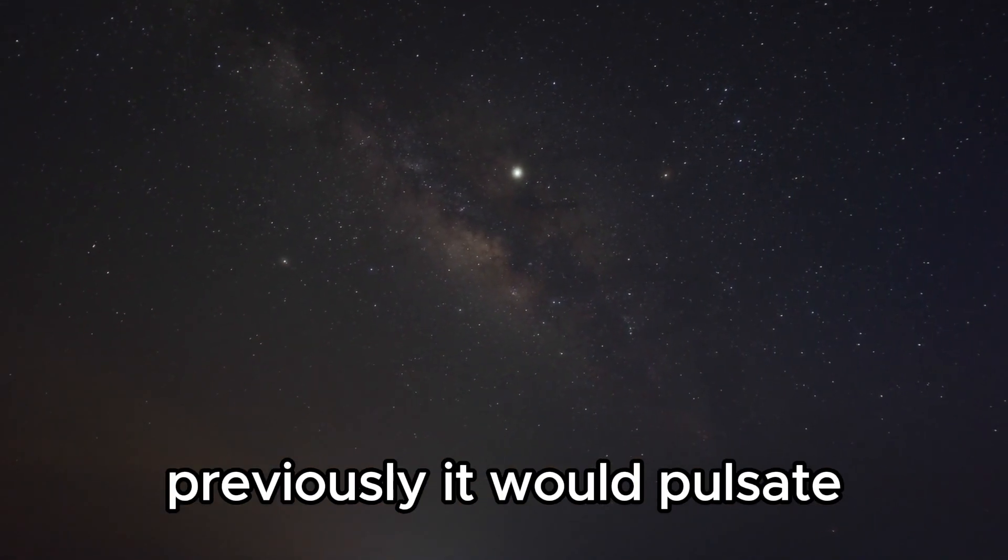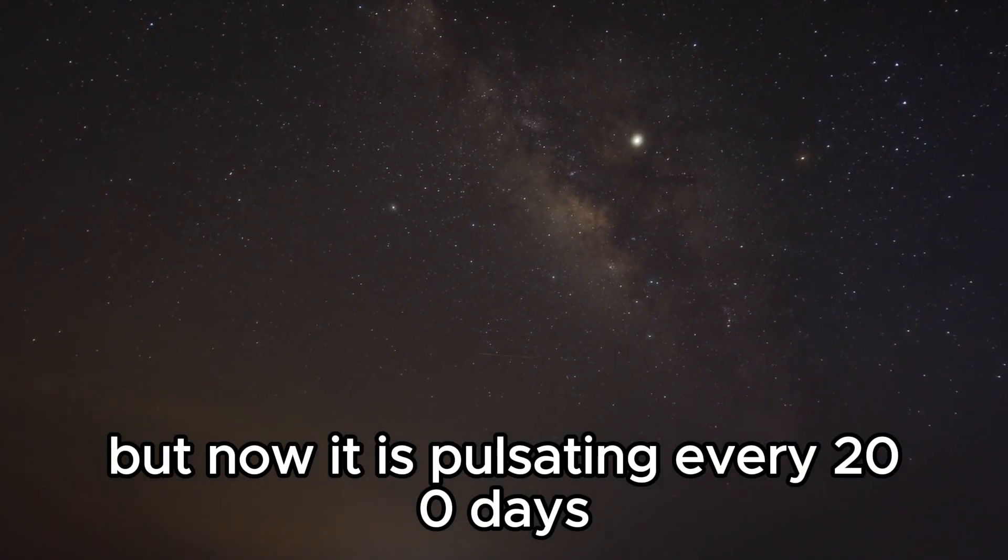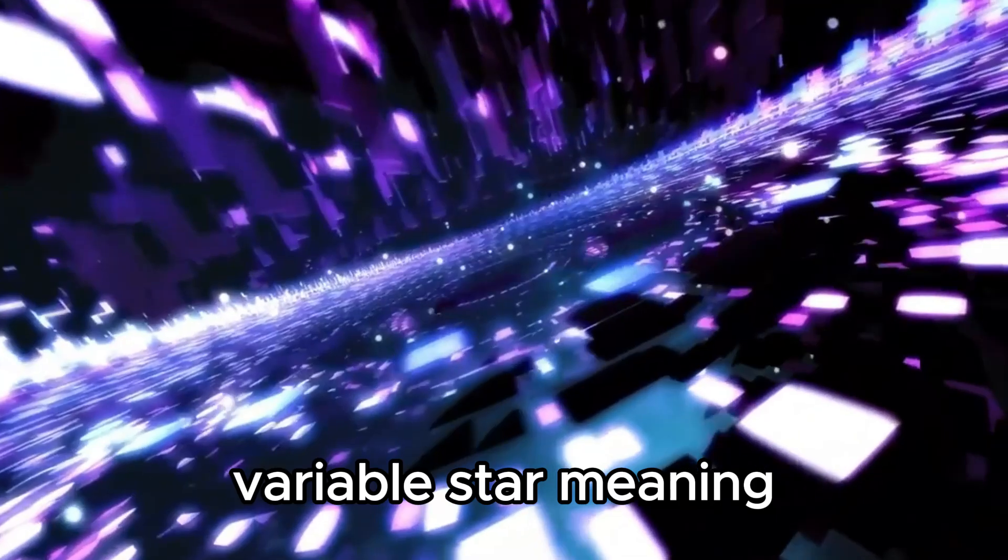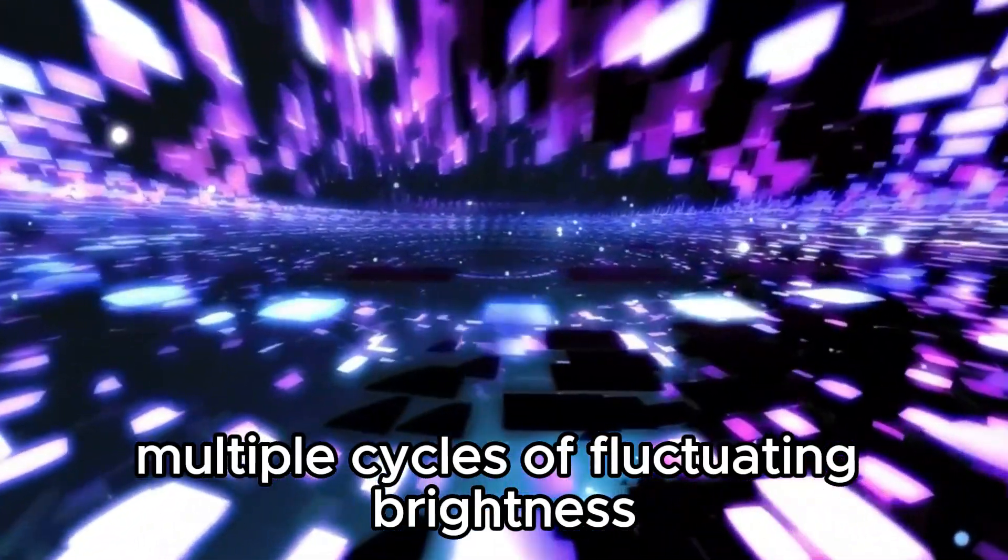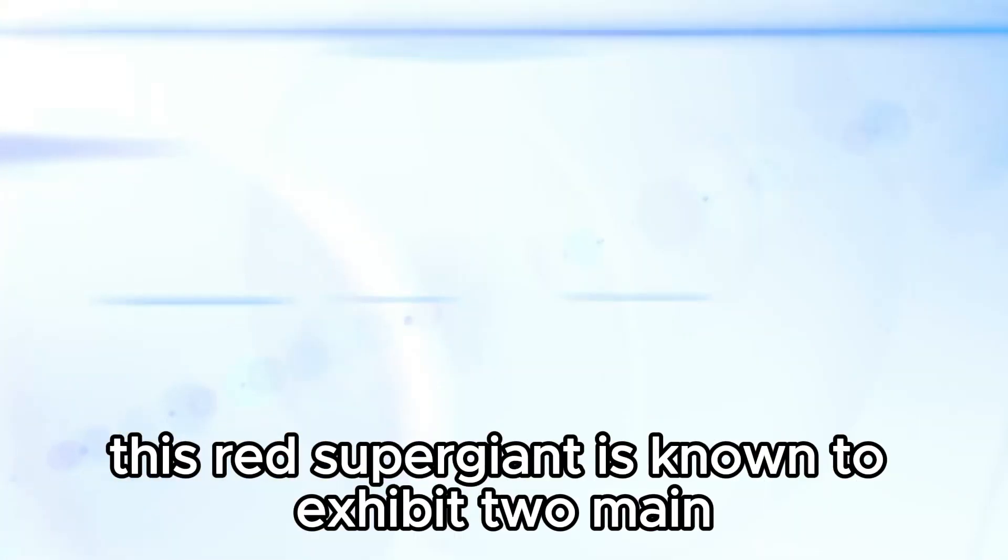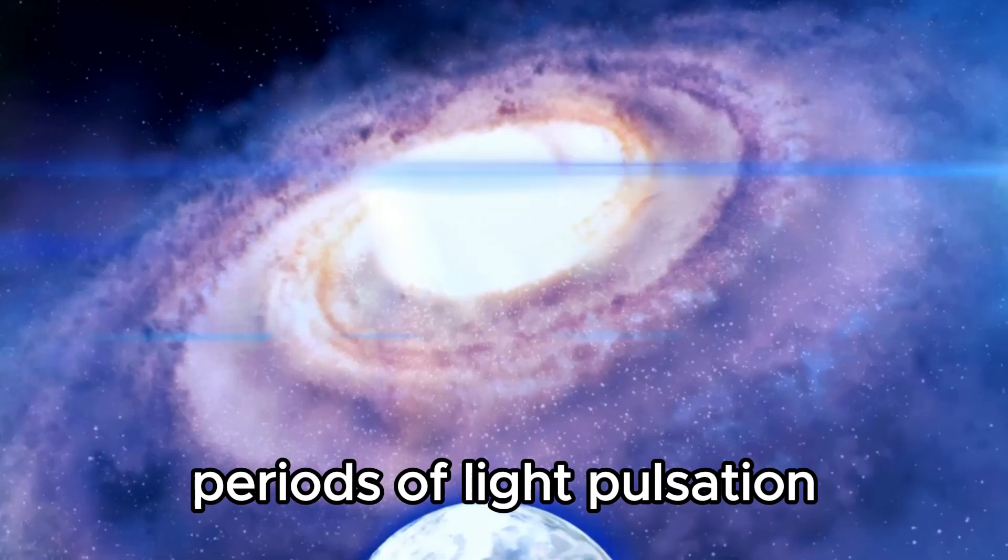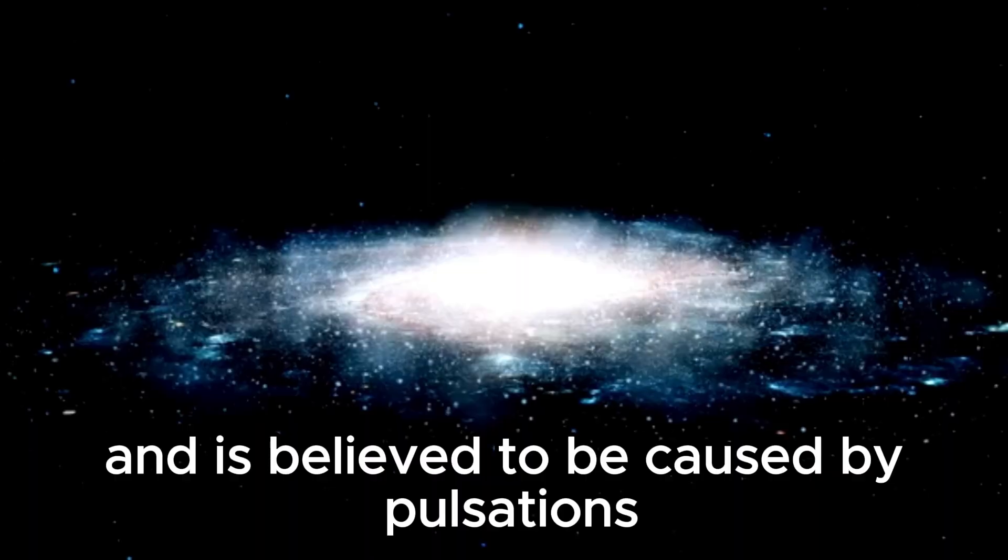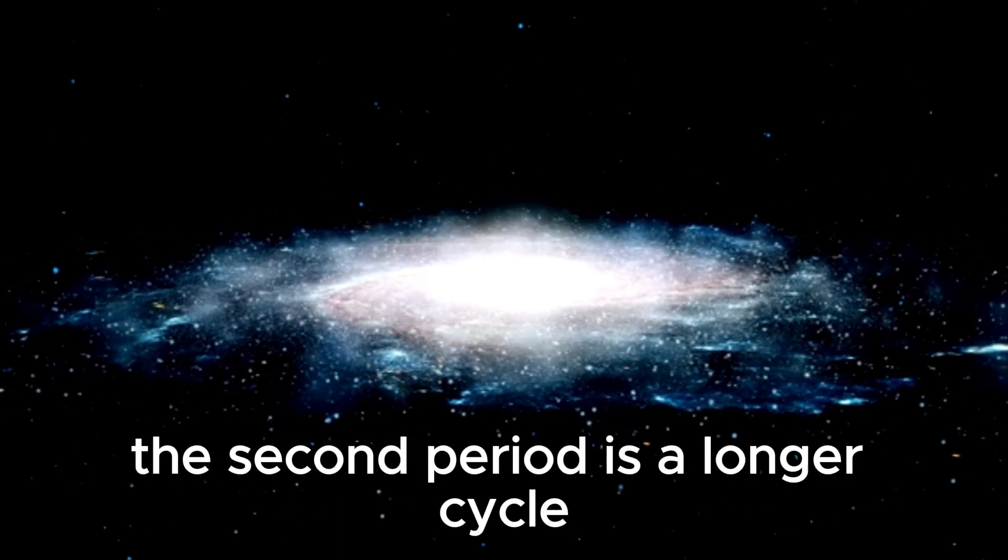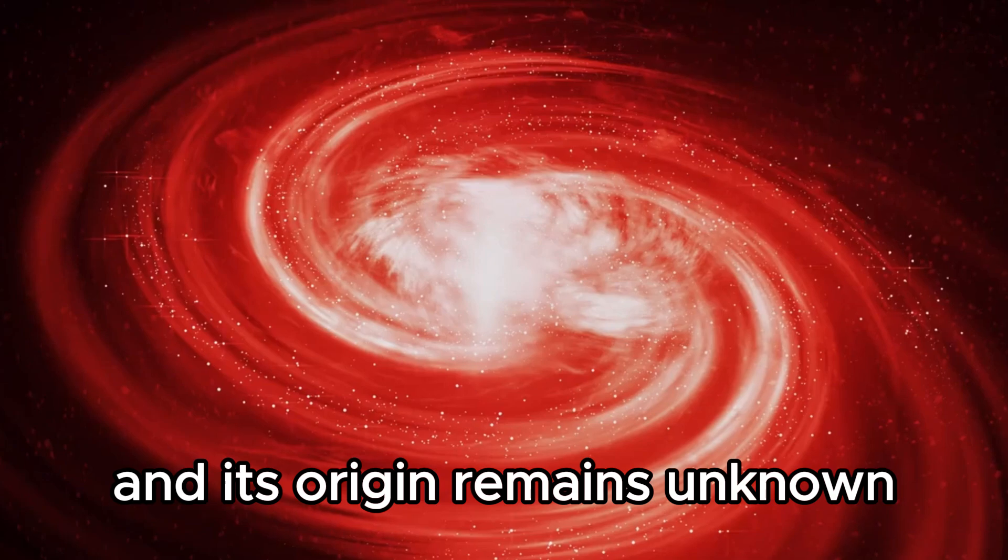Previously, it would pulsate or alter its brightness every 400 days, but now it is pulsating every 200 days. Betelgeuse is classified as a semi-regular variable star, meaning it experiences multiple cycles of fluctuating brightness due to variation in its size and temperature. This red supergiant is known to exhibit two main periods of light pulsation. The first period lasts 400 days and is believed to be caused by pulsations in the fundamental mode. The second period is a longer cycle of approximately 5.6 years, and its origin remains unknown.